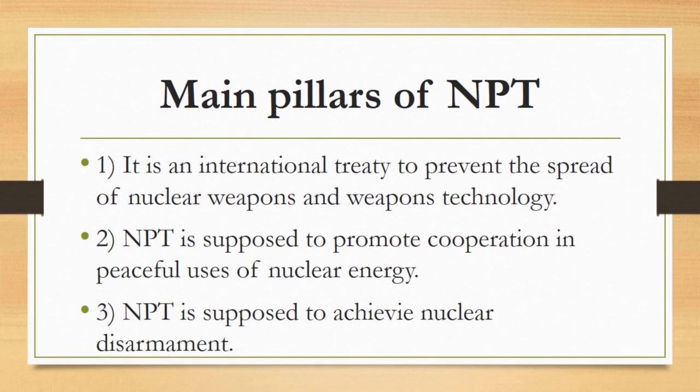Now, what are the main pillars of NPT? This treaty is based on three pillars, or we can say it is aimed at three functions. First, it is an international treaty to prevent the spread of nuclear weapons and weapons technology, meaning the main purpose of NPT is to stop the spread of nuclear weapons worldwide.